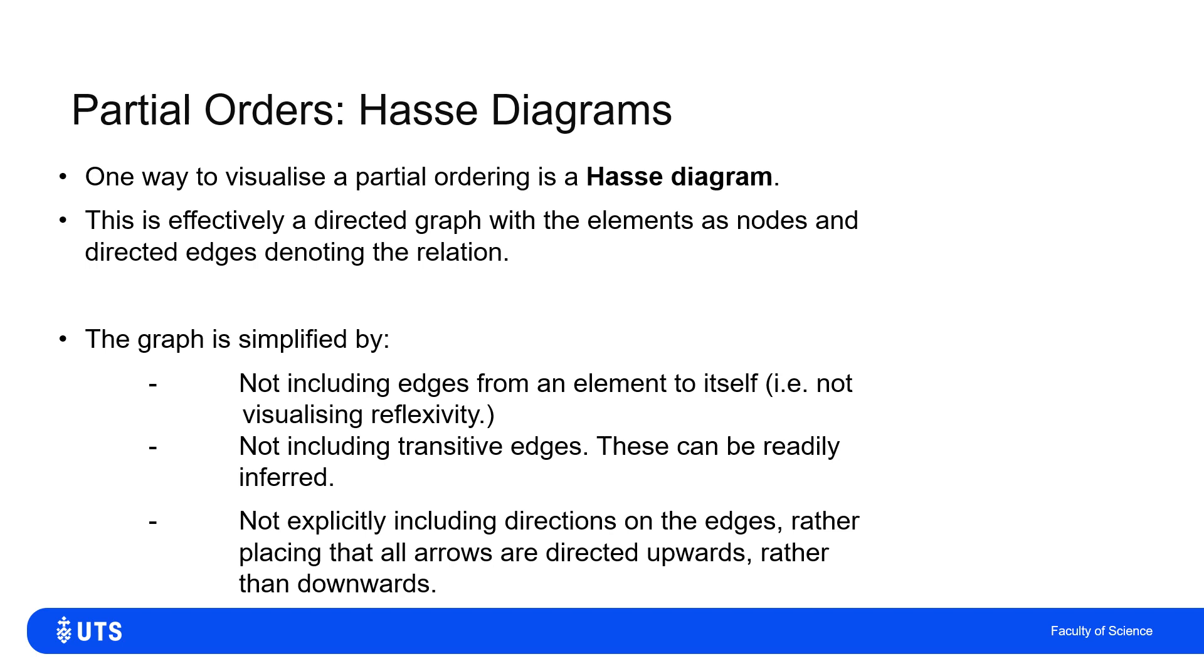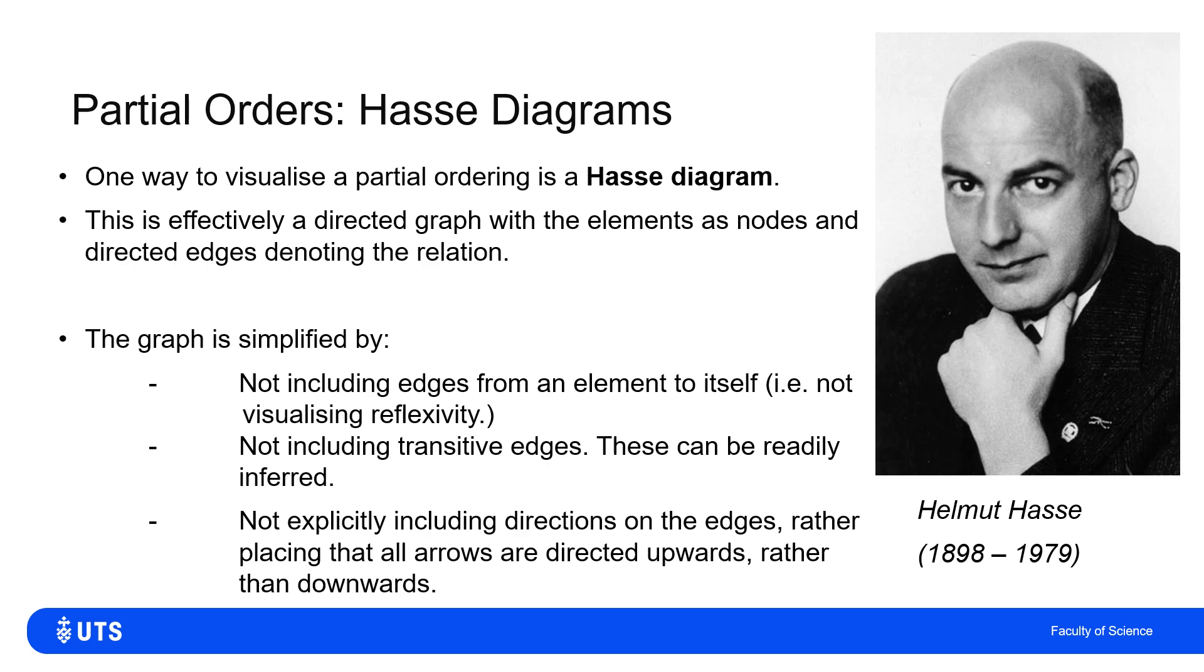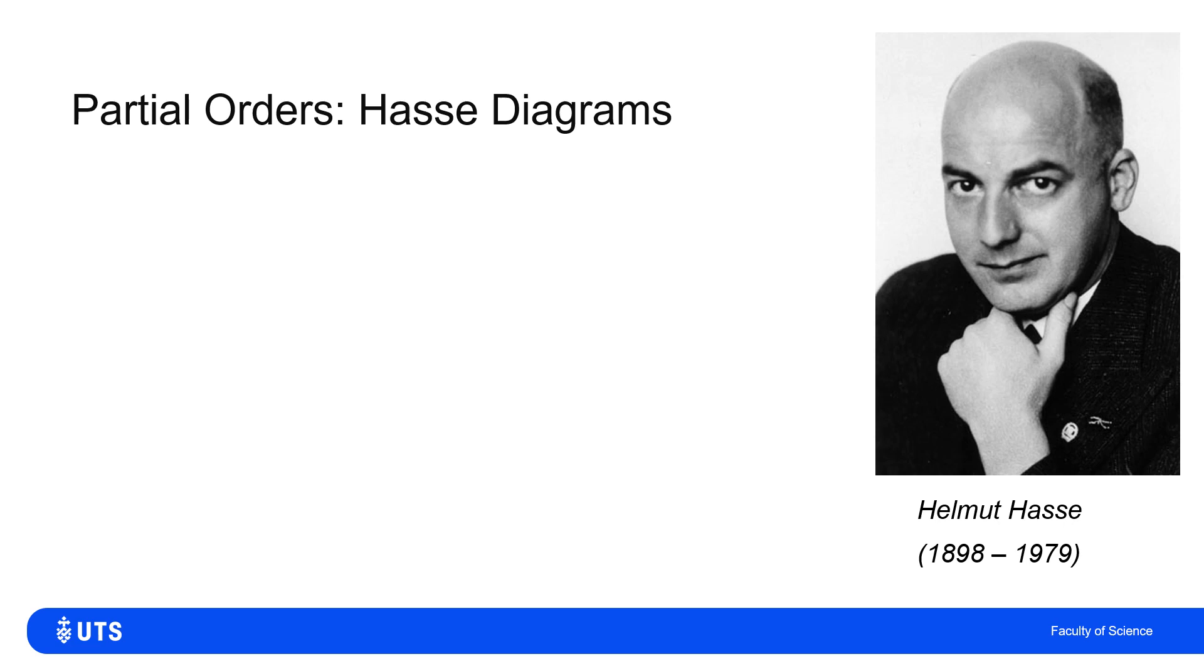And we don't, even though we have directed edges, we don't need to draw the arrows with the directions. We kind of assume that all arrows are directed upwards rather than downwards. And you'll see what that means when we get an example of a Hasse diagram. And these things are named after this handsome devil. Look into his beautiful German eyes. Helmut Hasse, the German mathematician.